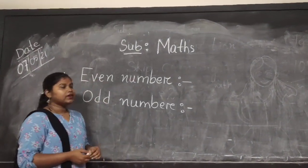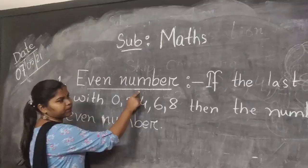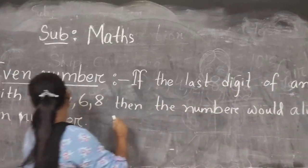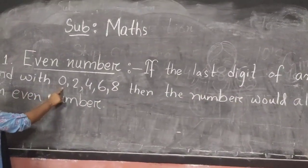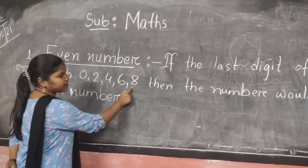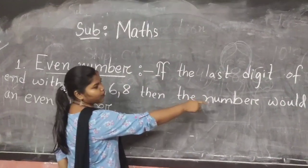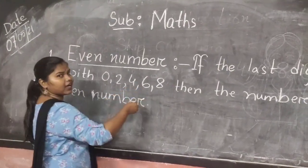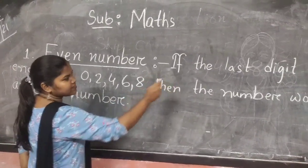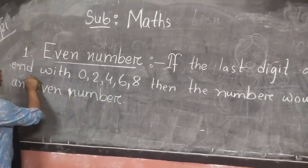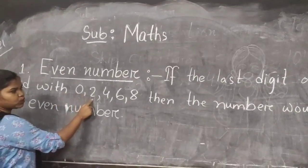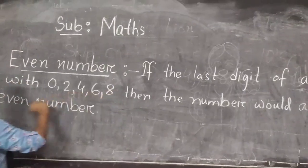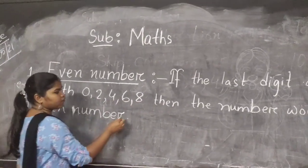At first we will discuss our event number. If the last visit of any number ends with 0, 2, 4, 6, 8 then the number would always be an event number.